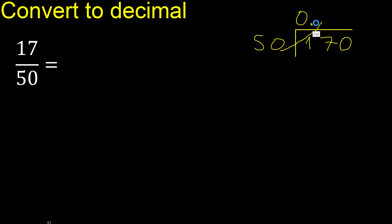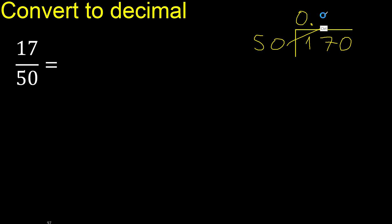Multiply by which number is nearest to 170 but not greater? 50 multiply by 4 is 200 — that is greater. 50 multiply by 3 is 150. Subtract: remainder is 20.